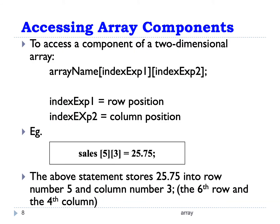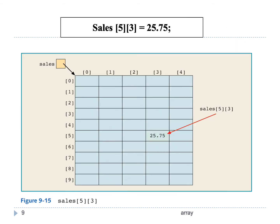To access a component of a two-dimensional array, we write the array name, then in the first square bracket the row index, and in the second square bracket the column index. For example, sales[5][3] equal to 25.75 means we store the value 25.75 into row index 5 and column index 3, which is the sixth row and the fourth column. This is shown in the table where the value 25.75 is at row index 5 and column index 3.